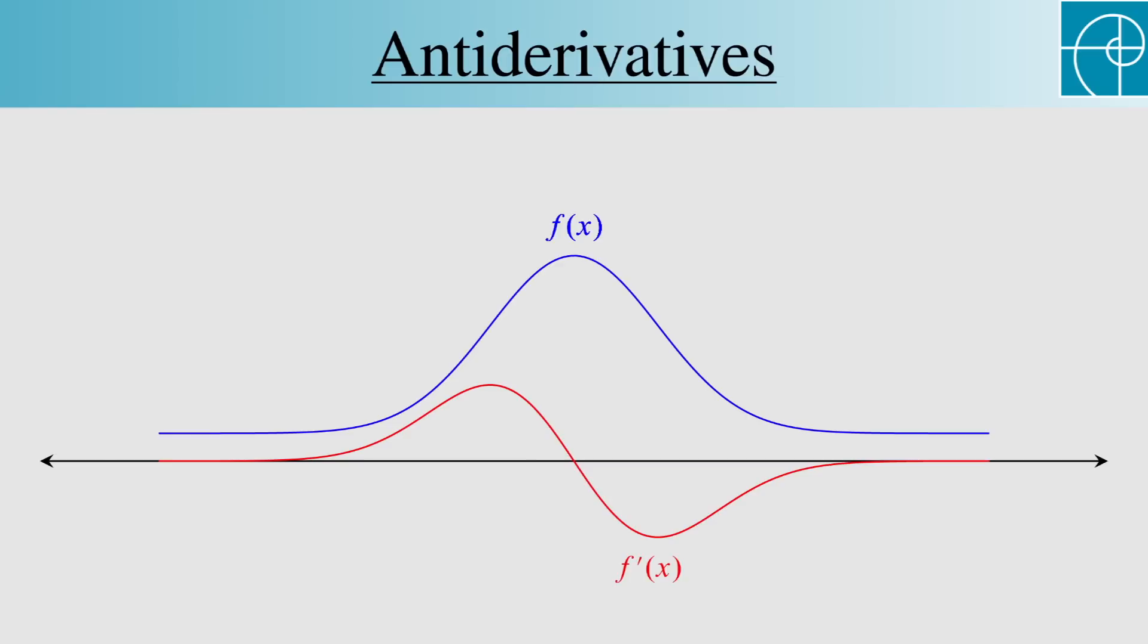We're not changing the slopes of the tangent lines of f just by shifting it up or down. At best, we know the original function up to some constant.